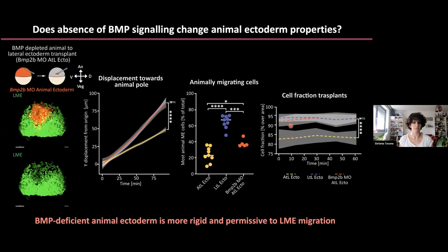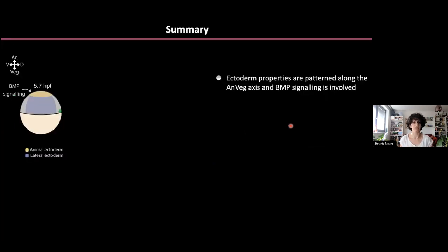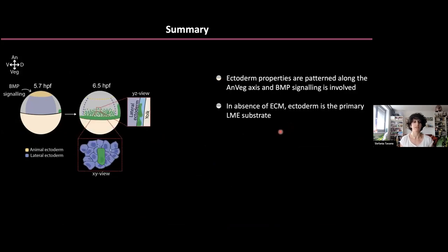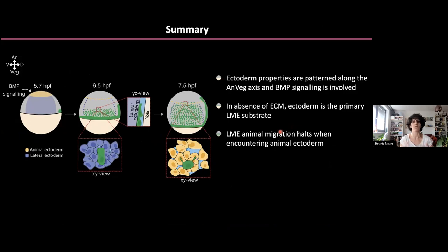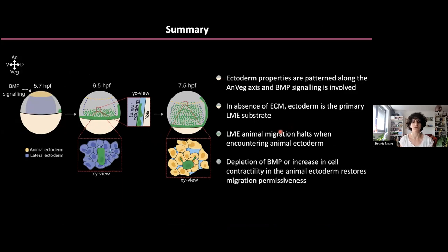To summarize: I showed you that ectoderm properties are patterned along the animal-vegetal axis, and BMP signaling is important for that. Lateral mesendoderm during gastrulation uses the ectoderm as primary substrate, and when cells reach the animal ectoderm, they halt migration — that is the onset of the tumbling phase. However, if we deplete BMP or increase contractility in the animal ectoderm, we can restore permissiveness to lateral mesendoderm migration.